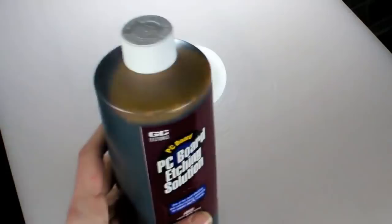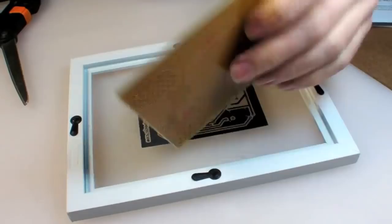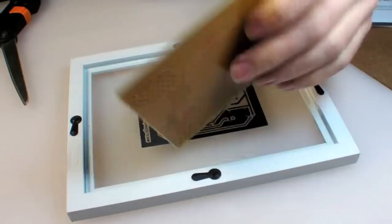I picked up the etchant, developer, and light-sensitive board I'll be using from Jameco's website. The pre-sensitized boards come with an opaque white film on them to avoid accidental exposure to ultraviolet light.